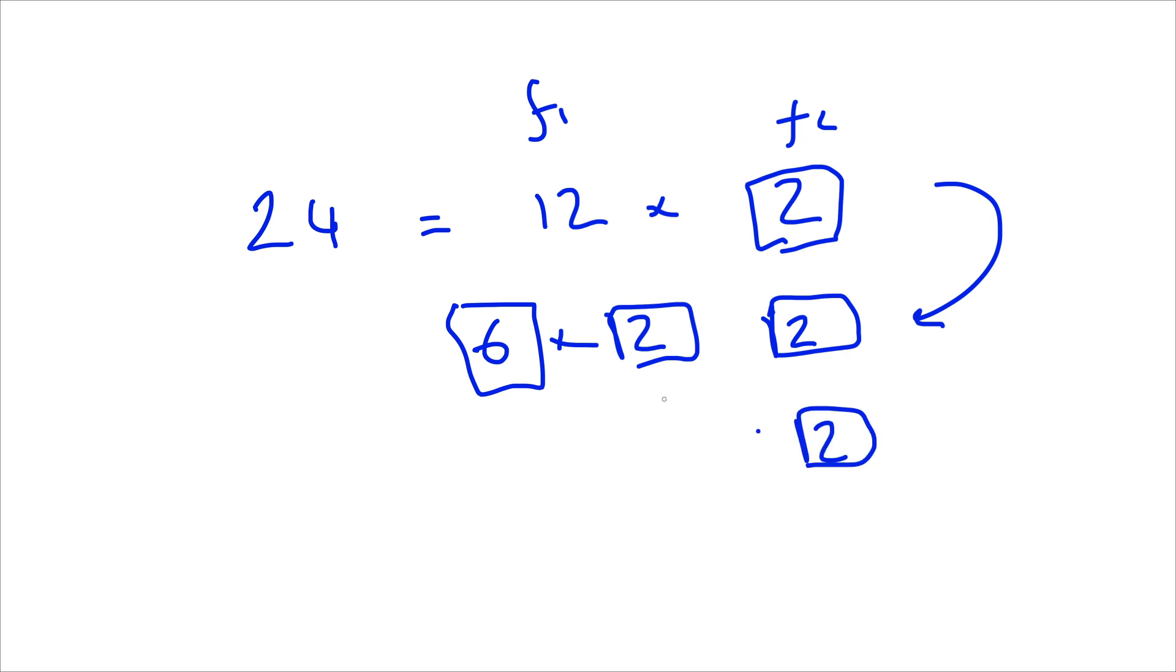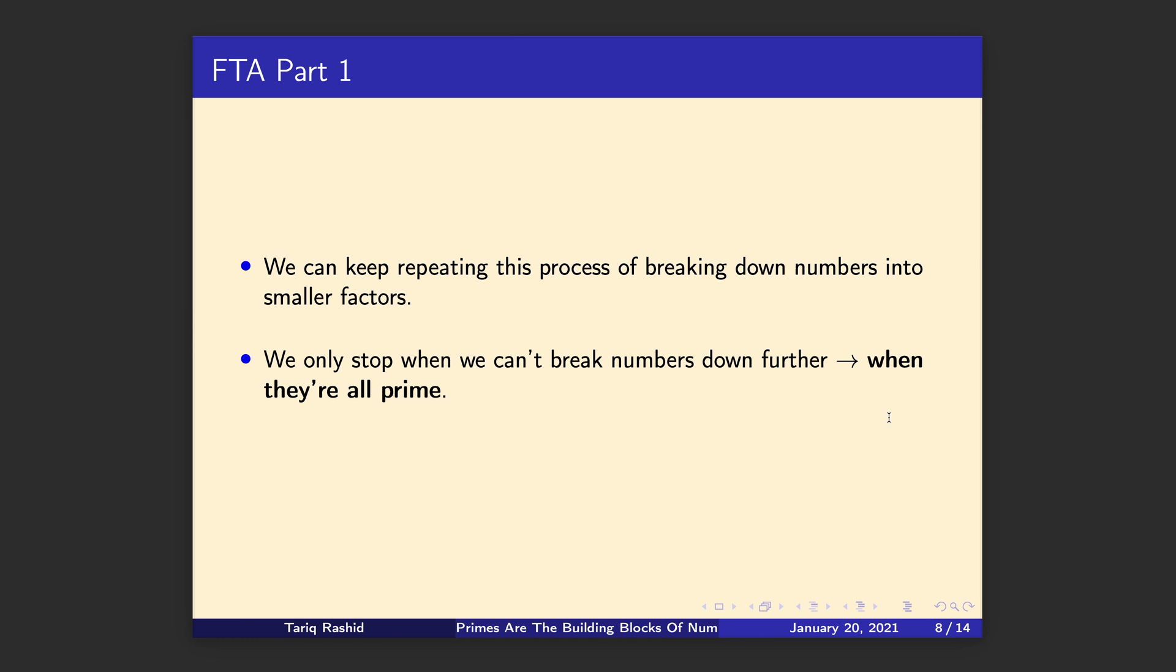And there we have our next level of kind of broken downness, decomposition, if we want to use a fancy word. Now 2 we know we can't break down any further, so we'll carry on. This 2 we can't, because that's a prime we know. 6 can, and that's 3 times 2. And now we can't break any of these down any further. These are all primes. So 24 can be broken down into 3, 2, 2, 2. So we've just illustrated with an example that process that we've described for breaking down any number into just a list of primes. And we can't break it down any further because they are primes. Great. So that's part 1 of the proof done.